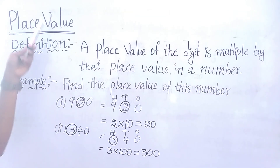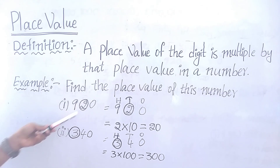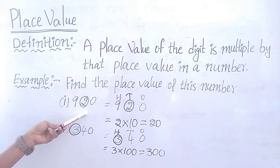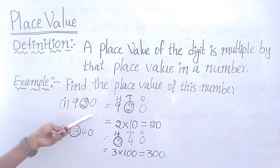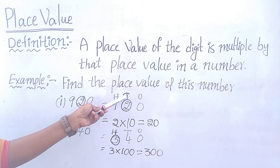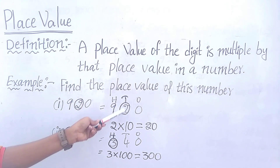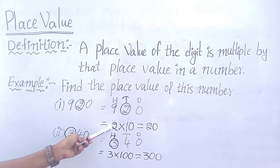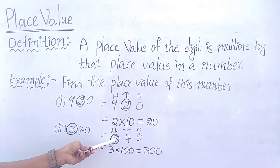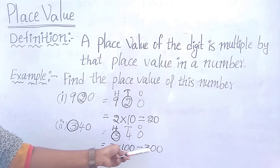Let's review the place values again. One example: 9, 2, 0. Find the place values: 0 in 1's place, 2 in 10's place, 9 in 100's place. So 2 in 10's place: 2 into 10 equals 20. Here 3 is in 100's place: 3 into 100 equals 300.